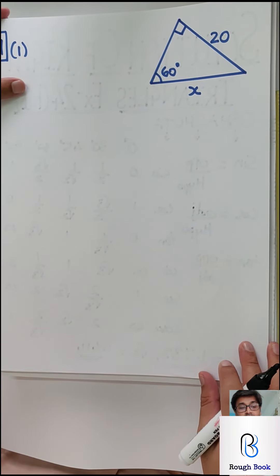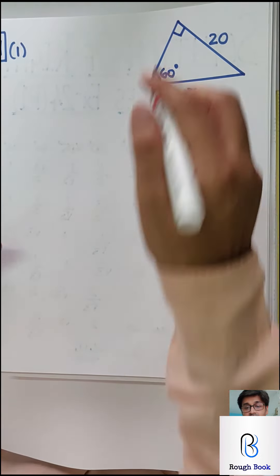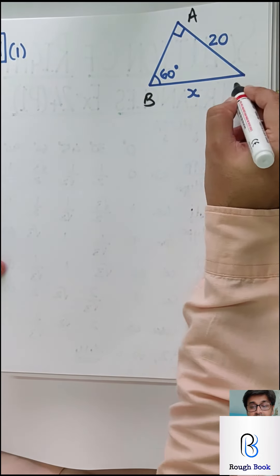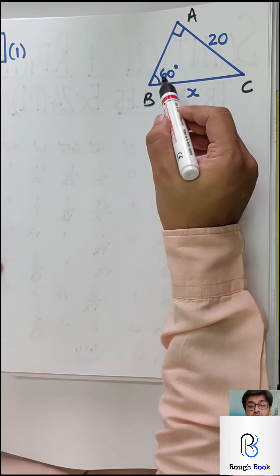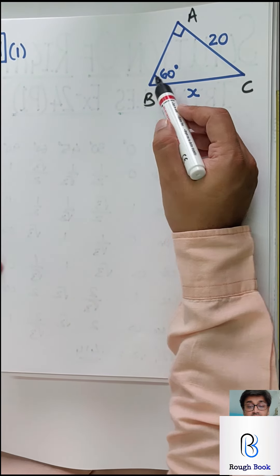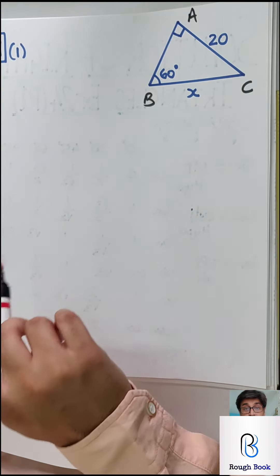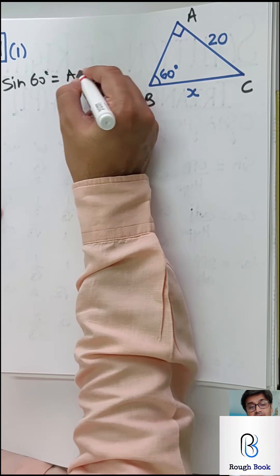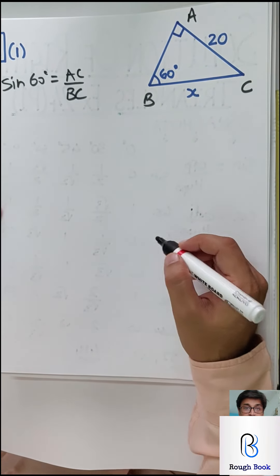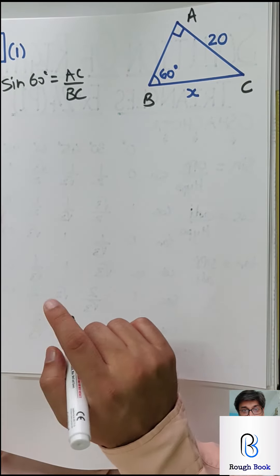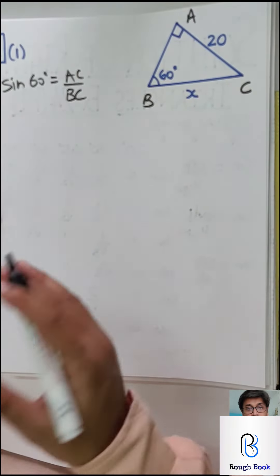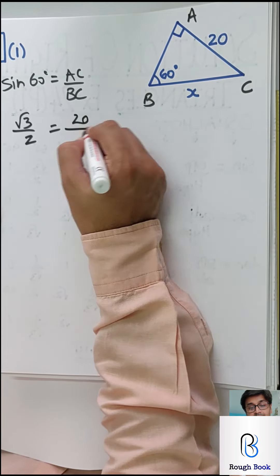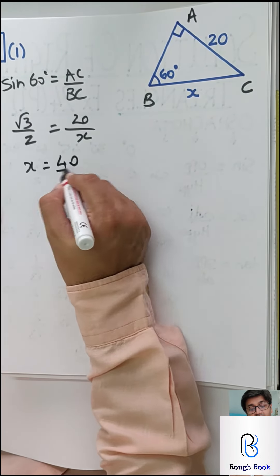Sum number 1, Part 1. They have given you a right-angle triangle. This is 20, this is 60 degrees, and this is x. Your target is to find x. Name it — your target is to find BC, that is x. Look at the angle given: the components related are opposite and hypotenuse, so opposite upon hypotenuse is sine. So sine 60 equals AC upon BC. Sine 60 is root 3 upon 2. AC is 20 and BC is x, so x goes on top and you get 40 by root 3.